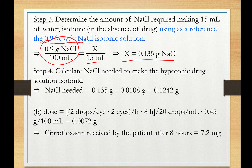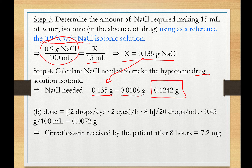The final step is to calculate the sodium chloride needed to make the hypotonic drug solution isotonic — now in the presence of the drug. We subtract Step 2 from Step 3: the amount in the absence of drug minus the amount osmotically equivalent to the drug. The sodium chloride needed to make the ciprofloxacin solution isotonic is 0.142 grams.